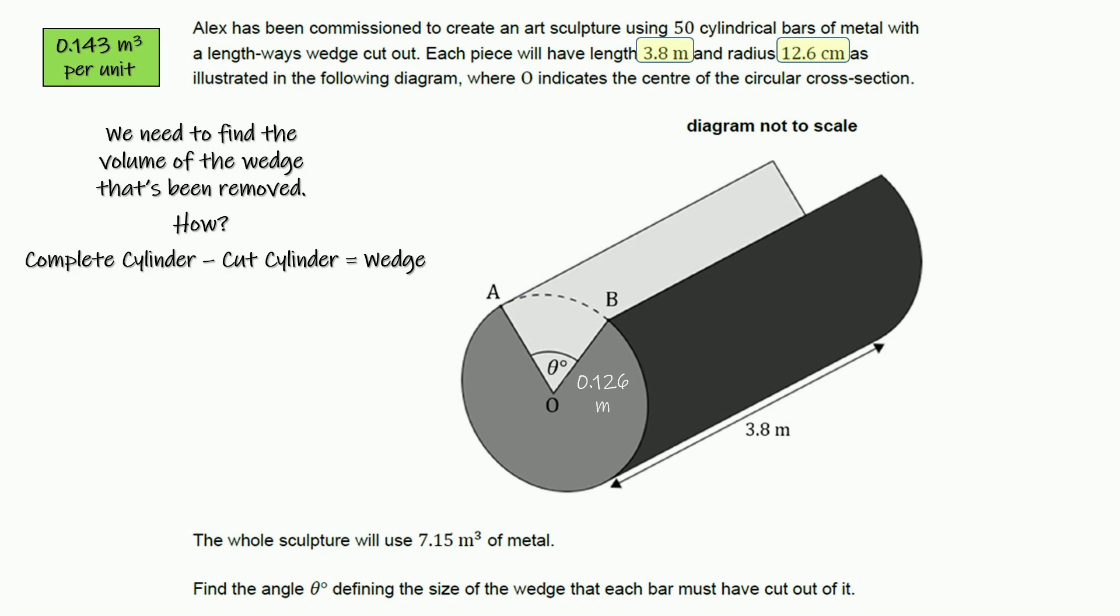Let's go ahead and look at our original diagram right here. So the complete cylinder, that would be pi r squared h. We know that the cut cylinder, what's remained here, is 0.143 cubic meters, so we can go ahead and put that there.